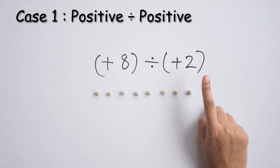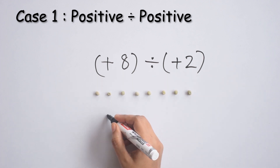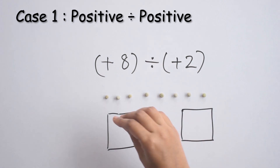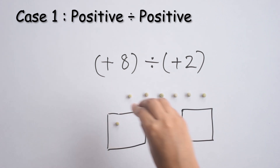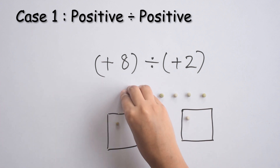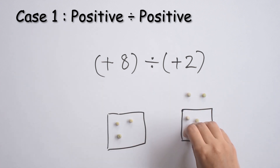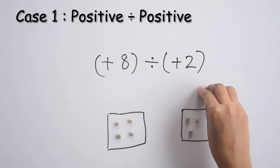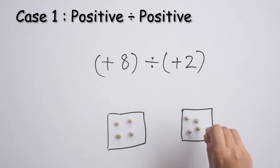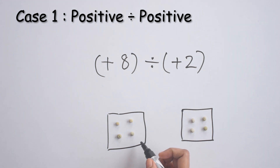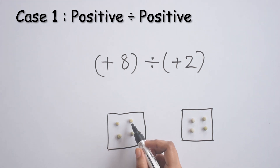We have to divide it into two equal groups, so let's draw two boxes. Let's start distributing: 1, 2, 3, 4, 5, 6, 7, 8. We now have equal number of peas in both the boxes. How many do we have in each group? We have 1, 2, 3, 4 — and they are green peas.